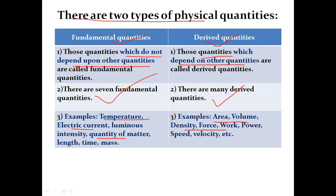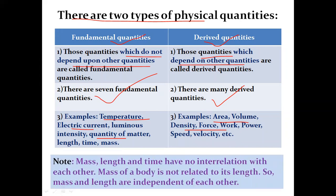Further derived quantity examples include force, torque, power, speed, velocity, and more. Mass, length, and time have no interrelation with each other — mass of a body is not related to length, so they are independent of each other. Similarly, temperature, electric current, luminous intensity, and quantity of matter are also independent of each other.